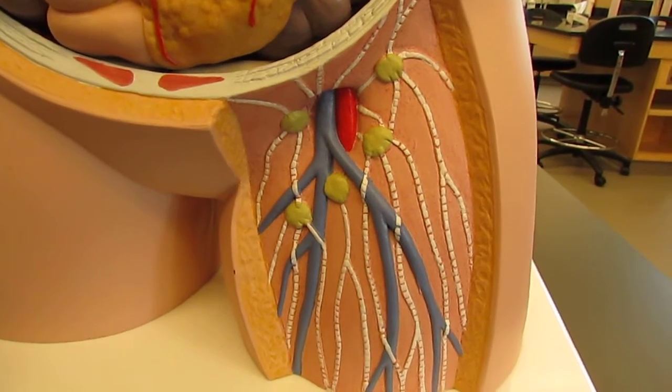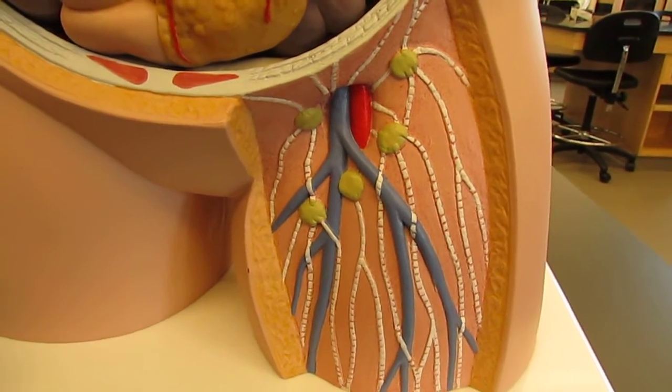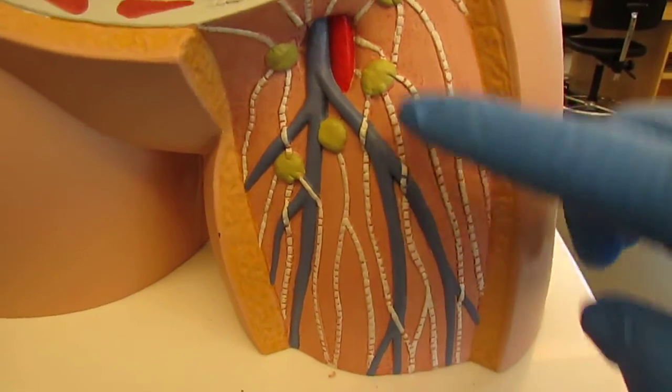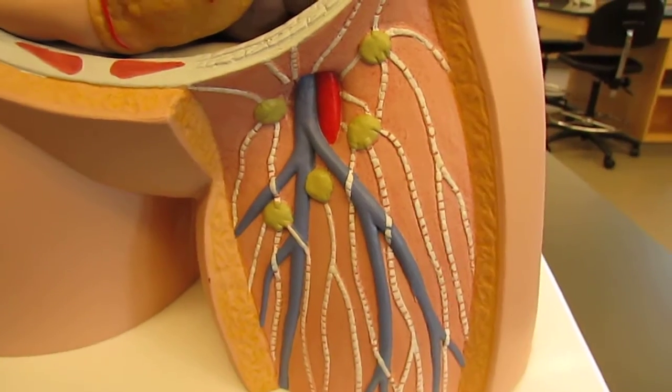And essentially, lymph fluid needs to be milked up to the heart. And so these white vessels right here are lymphatic vessels.